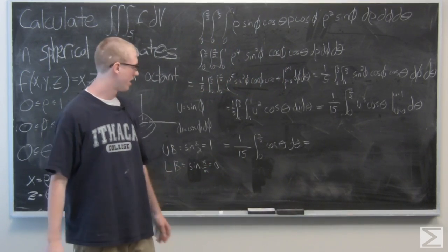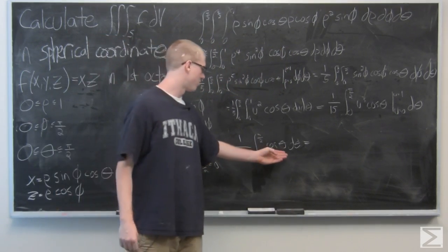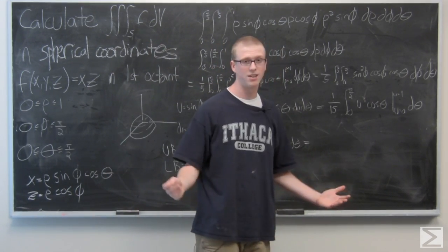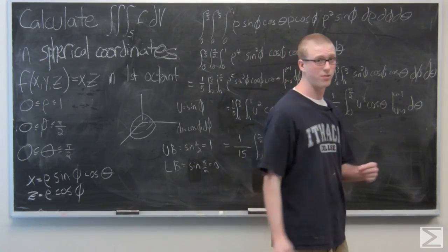Now it's a fairly simple integral to evaluate. As you should know, the antiderivative of cosine theta is just sine theta, which we're going to evaluate from 0 to pi over 2.